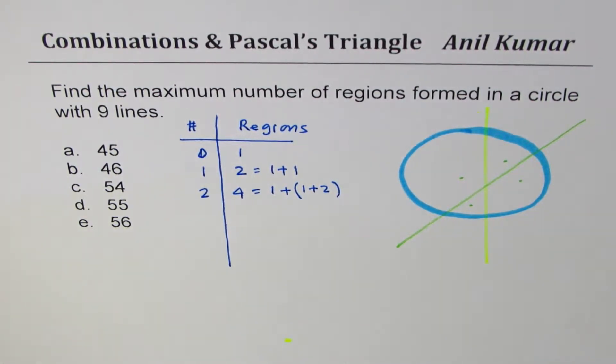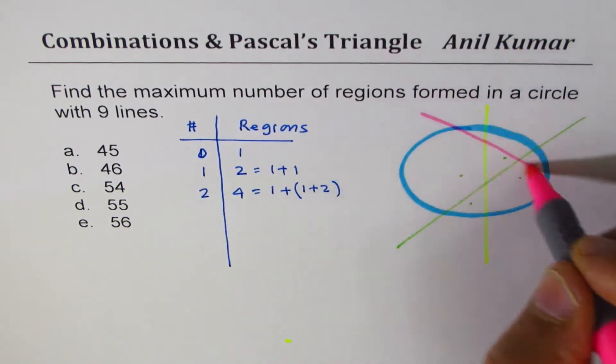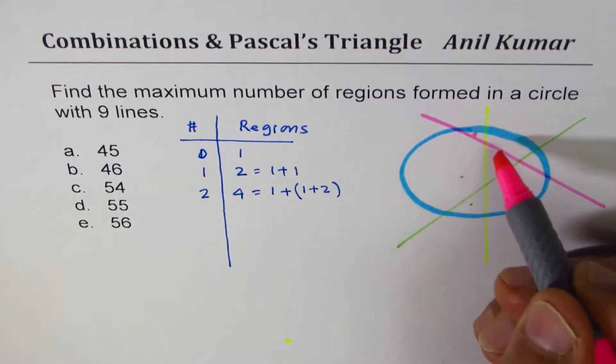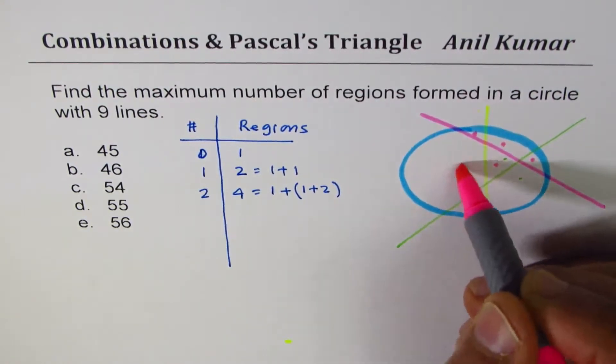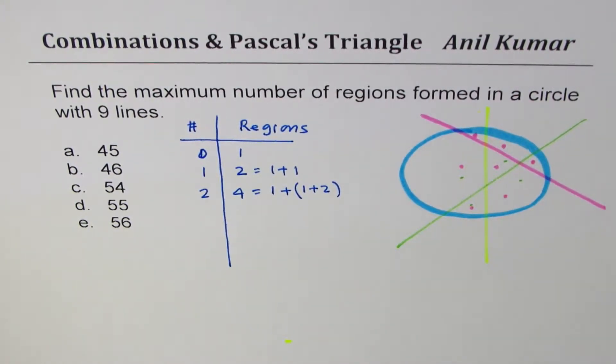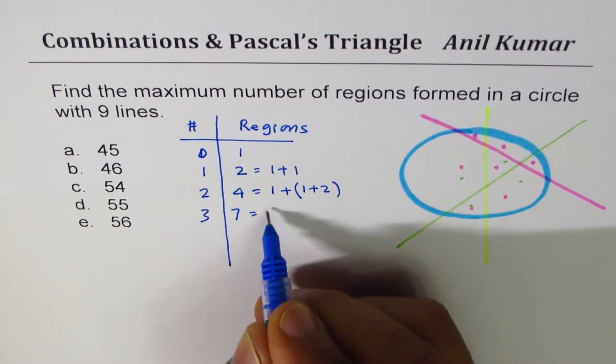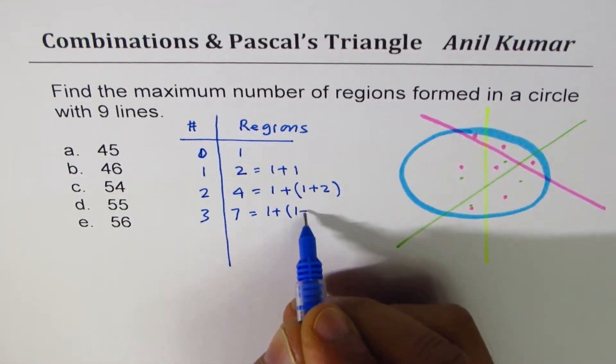If you draw one more line here, then what do you find? You find one, two, three, four, five, six, seven regions. So third line: seven, which you get as one plus one plus two plus three.